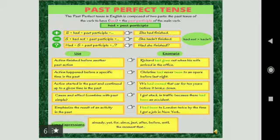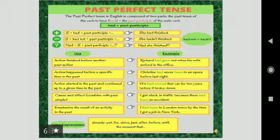Now past perfect tense. The past perfect tense in English is composed of two parts. The past tense of the verb to have will become had plus the past participle of the main verb. Main verb is your base verb. So how to frame an affirmative sentence?